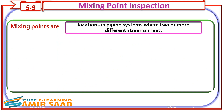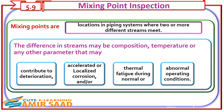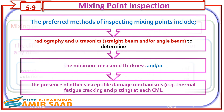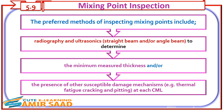Mixing points are locations in piping systems where two or more different streams meet. The difference in streams may be composition, temperature, or any other parameter that may contribute to deterioration, accelerated or localized corrosion, and/or thermal fatigue during normal or abnormal operating conditions. The preferred methods of inspecting mixing points include radiography and ultrasonics — straight beam and/or angle beam — to determine the minimum measured thickness and/or the presence of other susceptible damage mechanisms, for example thermal fatigue cracking and pitting, at each CML.